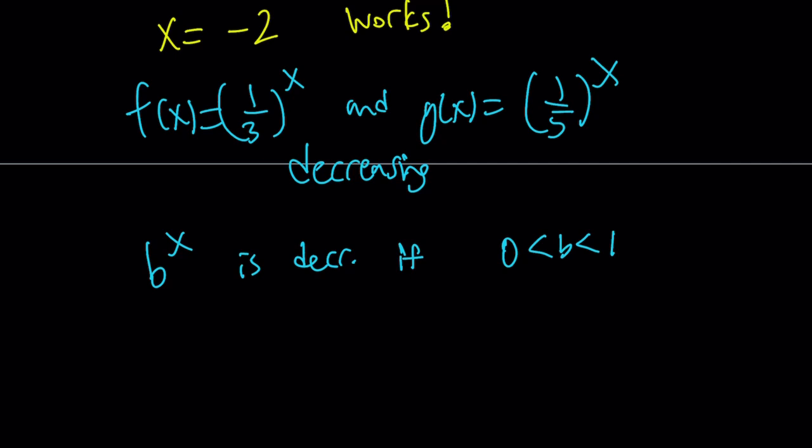You don't want a negative base. That's going to be problematic. So this function is going to be decreasing. Obviously, as you raise 1 third and 1 fifth to higher and higher powers, you're going to get smaller and smaller numbers.